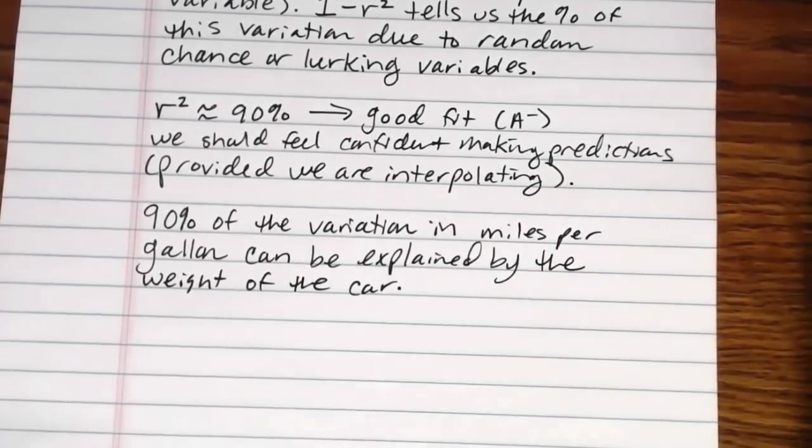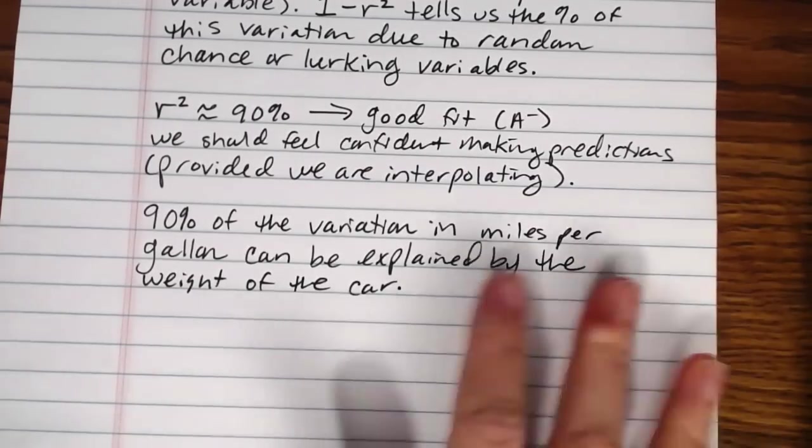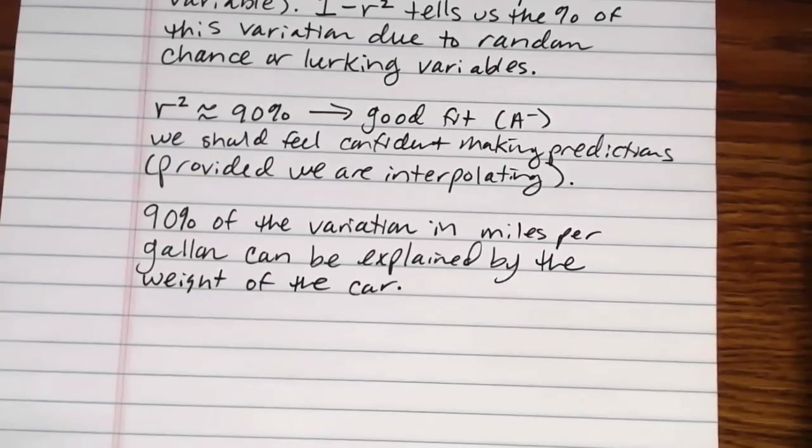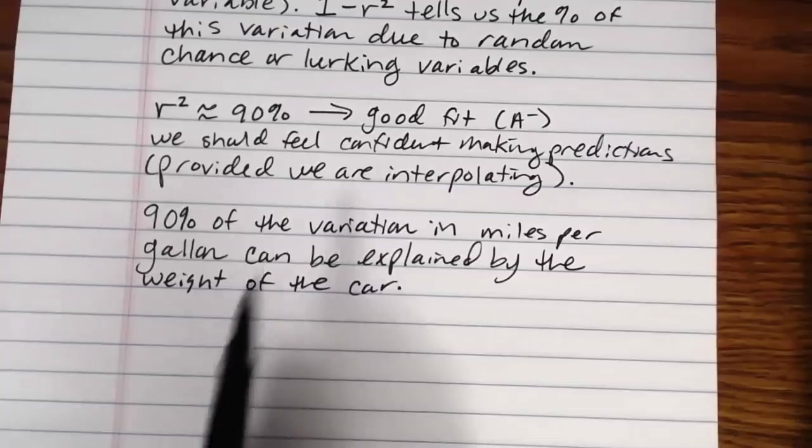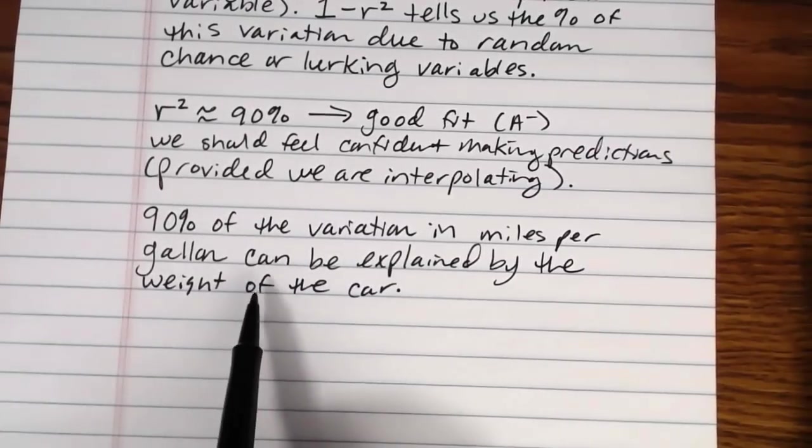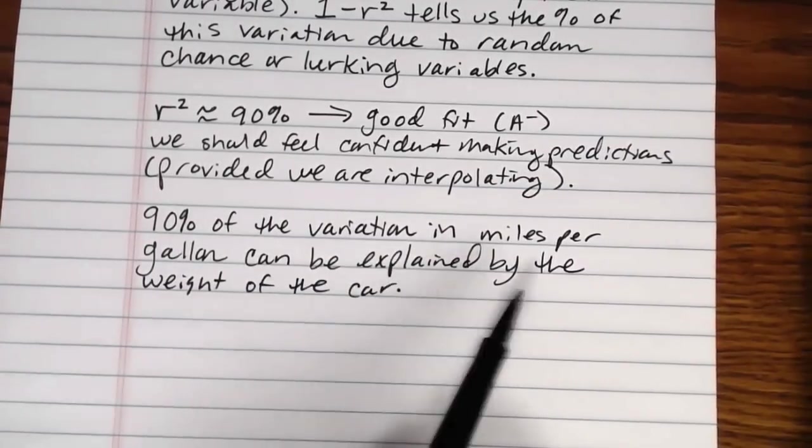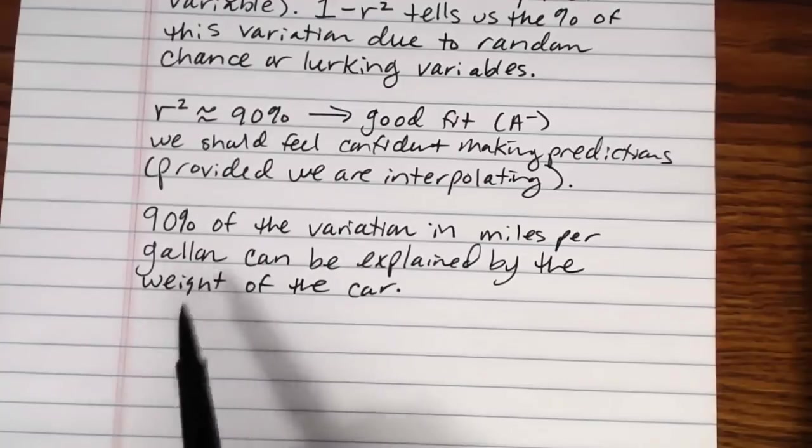And it makes sense when you think about this particular scenario realistically. It's not as though the only thing that determines the variation in miles per gallon is the weight. It doesn't determine 100% of the miles per gallon, right? Other factors go into play, how much you inflate your tires, right? The PSI, how old the car is, is it well maintained, you know, what model of car, how big is it? All sorts of things go into the miles per gallon. But approximately 90% of that variation in miles per gallon can be explained solely by the weight of the car.